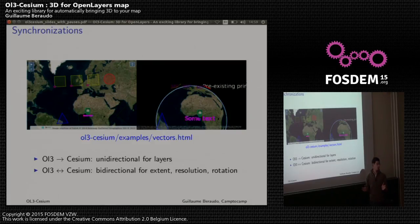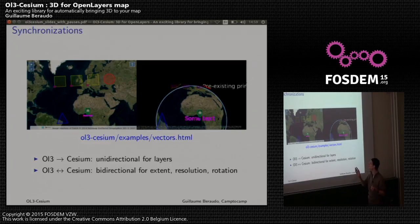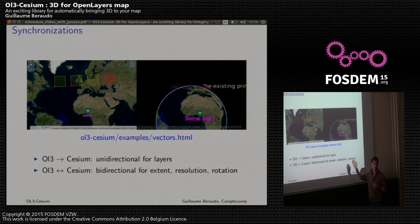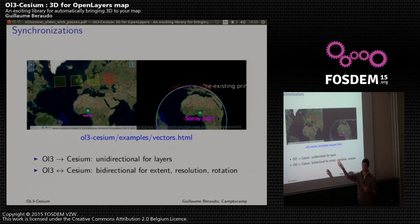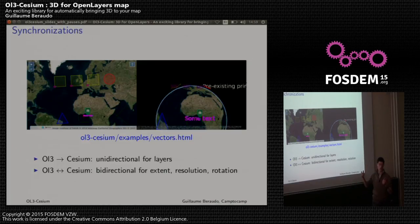There is bidirectional synchronization for the view parameters: the extent, the resolution of the map, and the rotation. If you rotate the OpenLayers map, it will also rotate on the Cesium globe. And if you rotate the Cesium globe by moving the mouse, it will also rotate on the 2D map. This is true for both the side-by-side and the stacked case.